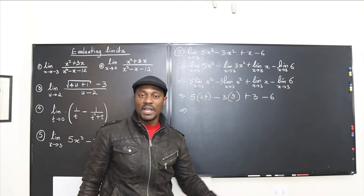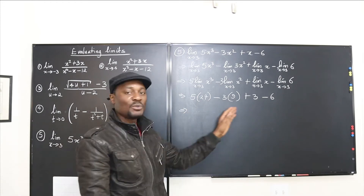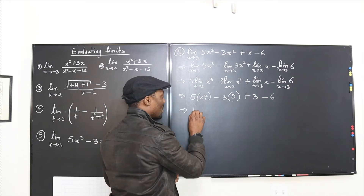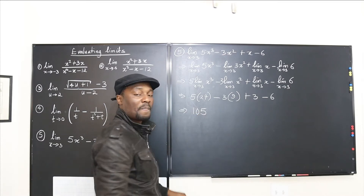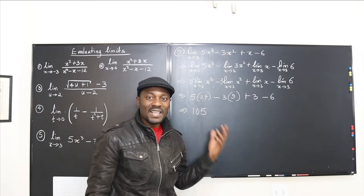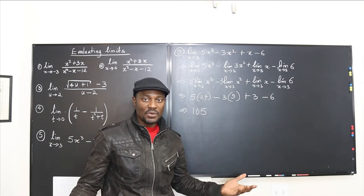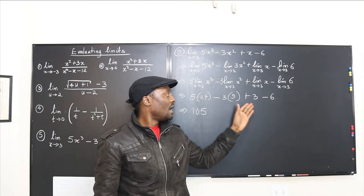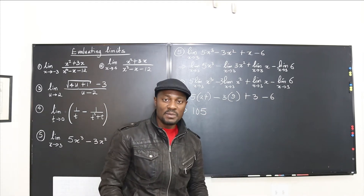If you punch this into a calculator, by the time you're done you know this is going to be 105. So that's how this works — this is basically what you do in evaluating a limit.